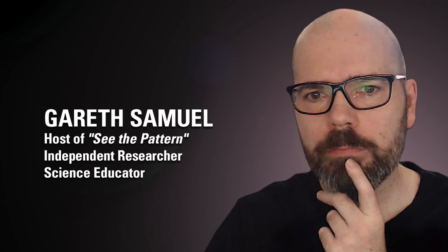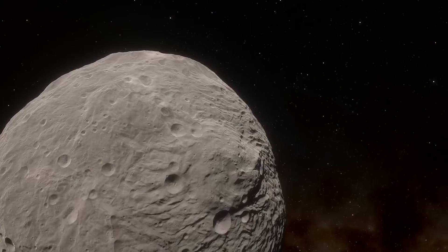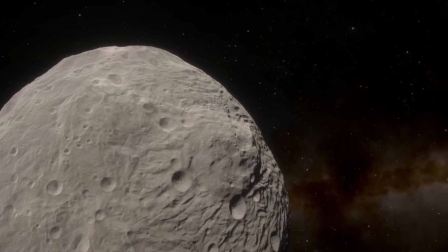Vesta has been identified as the source of a very common class of meteorite which makes up about 6% of the meteorites which fall to Earth. It boasts some remarkable features across its surface.